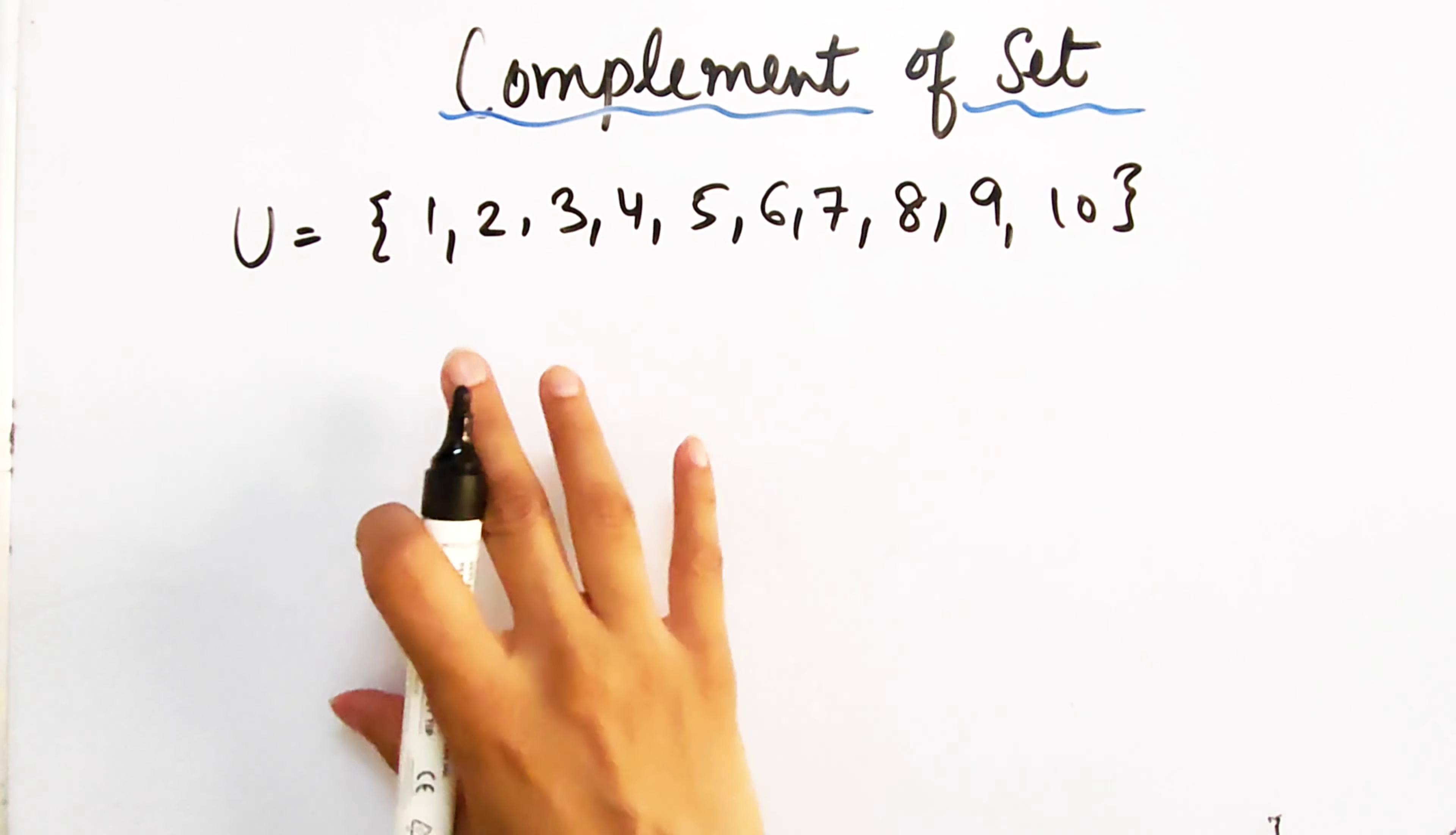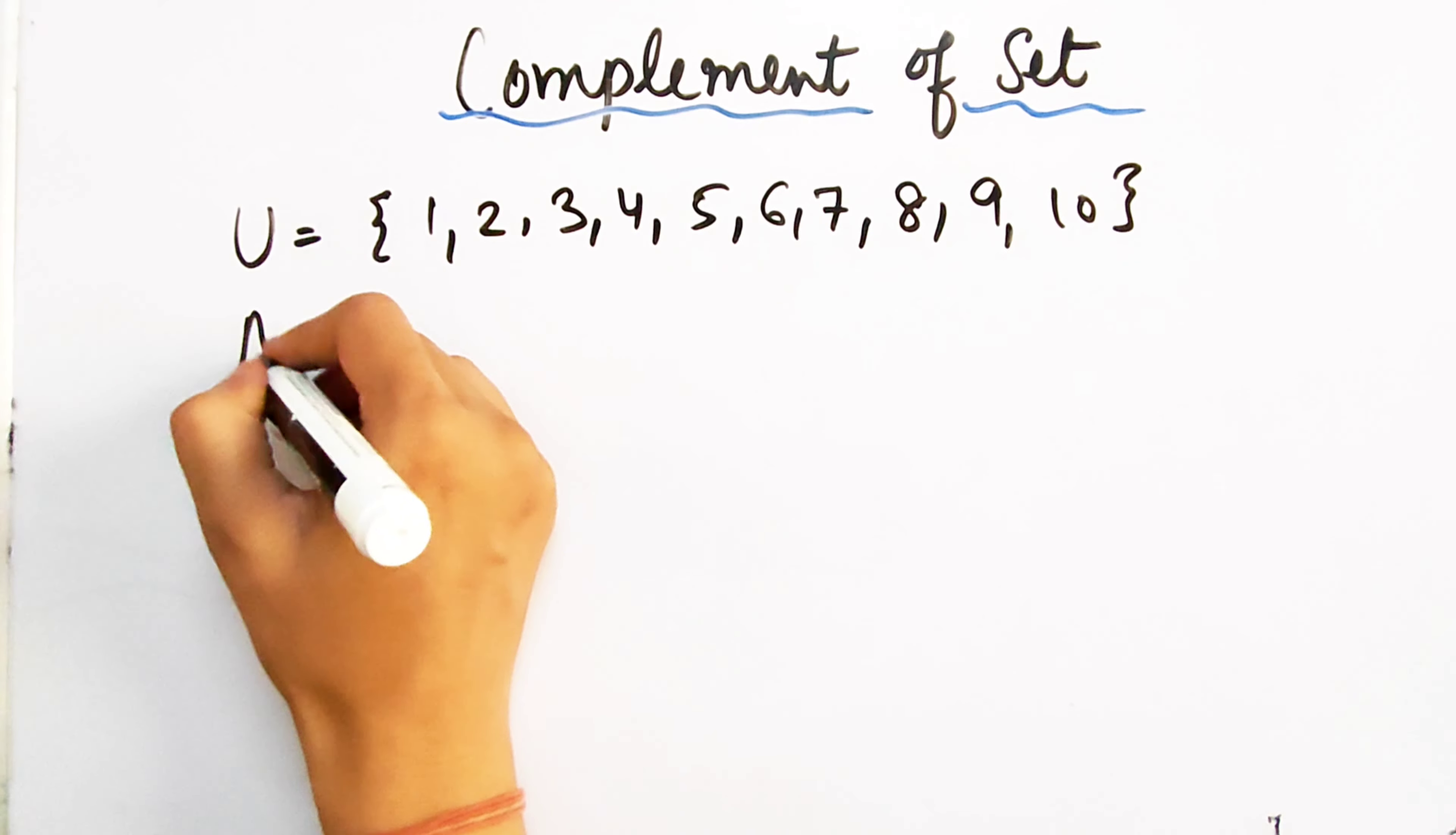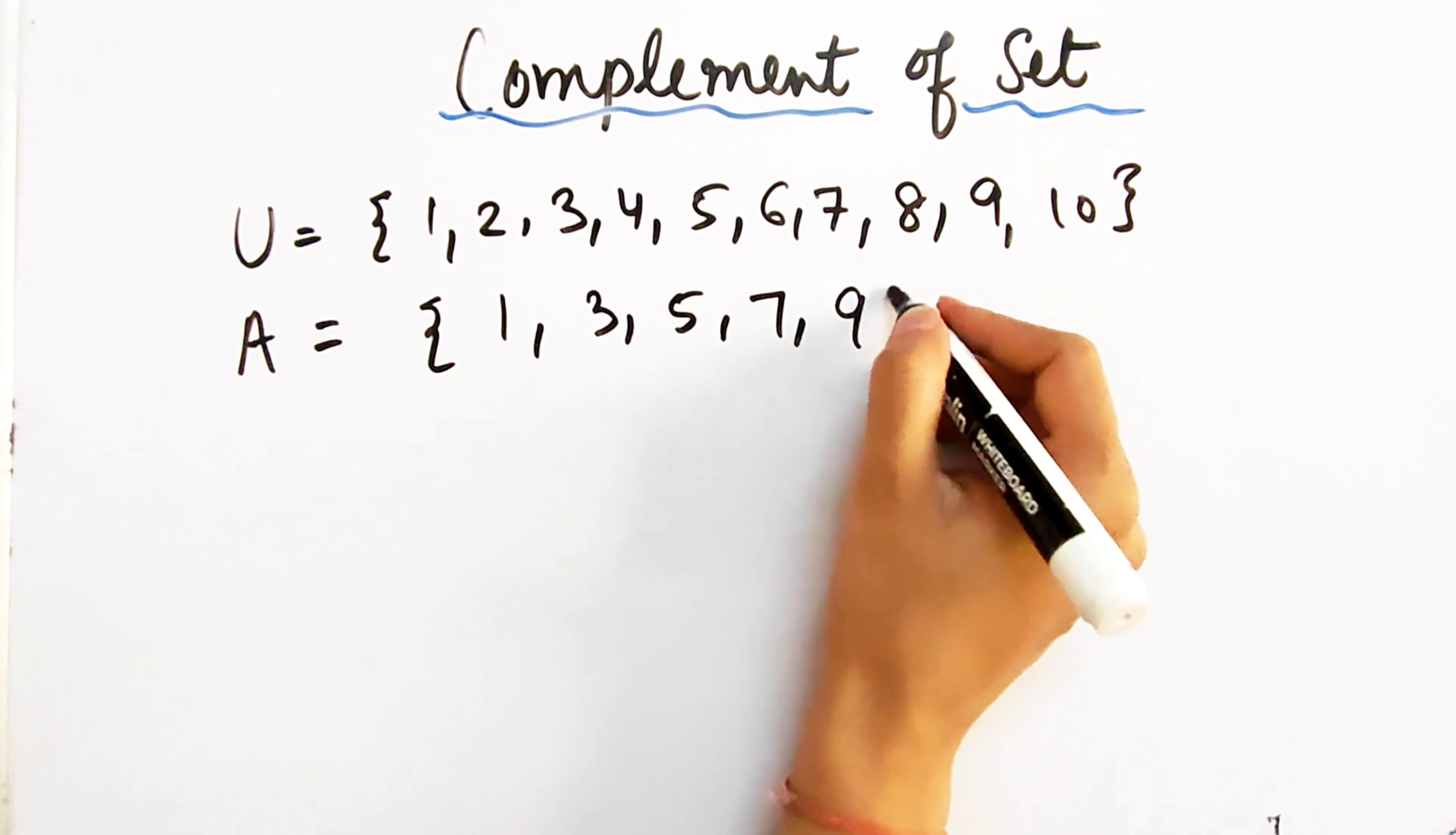I'm going to write it in the roaster form so that you can show one element. Let's take an example of a set. We take an example of a set 1, 3, 5, 7, 9.